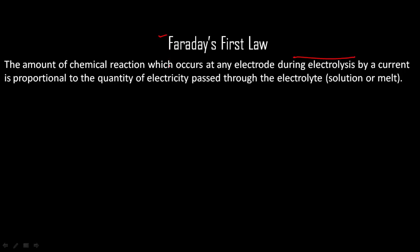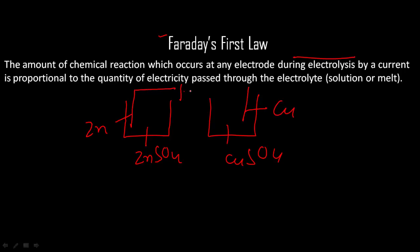Now what happens during electrolysis is that we pass electricity and some amount of substance is produced. Just like let's say I have ZnSO4 and CuSO4. I dip a zinc electrode on this side, I dip a copper electrode, and the external potential is more than 1.1 volt. Then this cell acts as an electrolytic cell and zinc is liberated at this side.